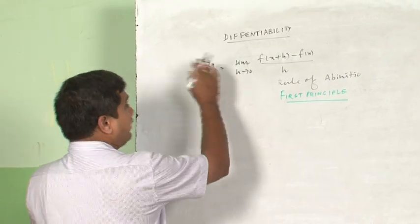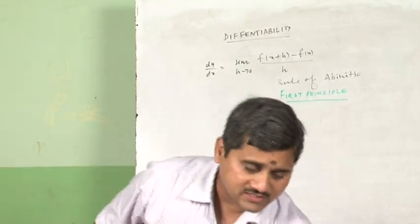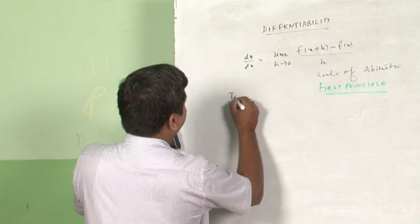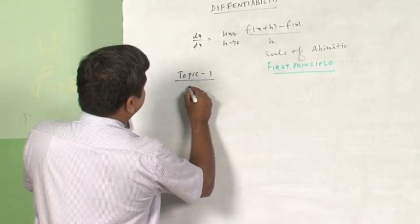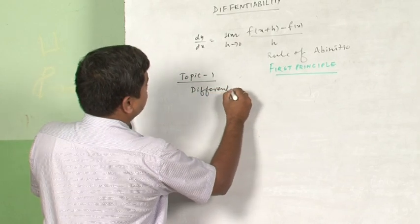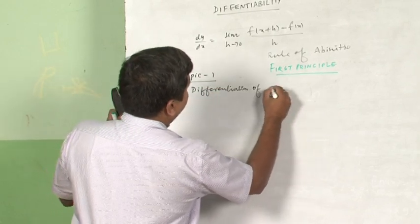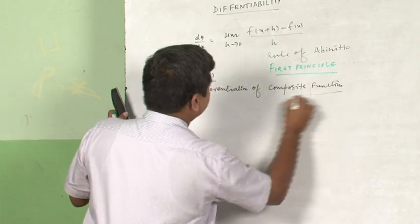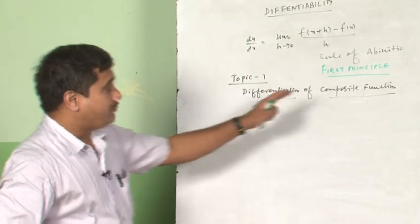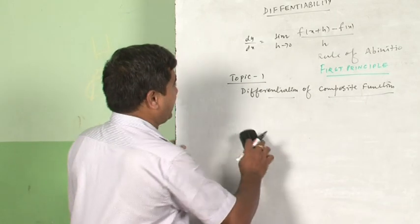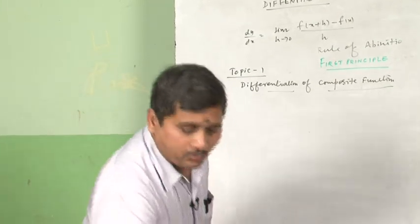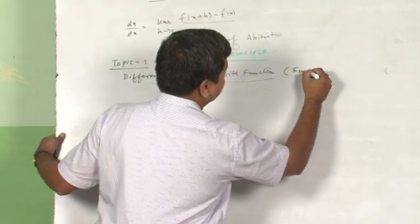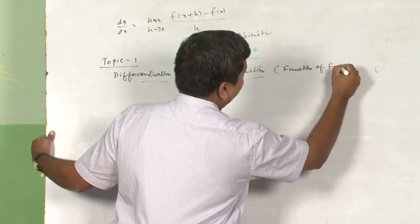I will be continuing from where we stopped in class 11th. The first topic in class 12th differentiability is differentiation of composite functions. This is also called differentiation of function of a function. Interestingly I ended in the previous topic with composite functions, and now I am continuing with the same topic.